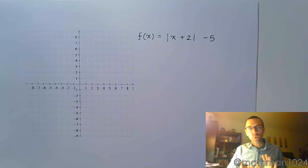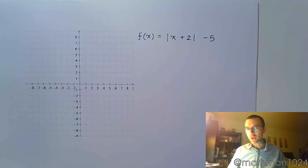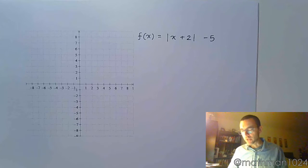So now that we've seen the main ways that we have of changing the location of our functions, let's apply that here to this function. f of x equals the absolute value of the quantity x plus 2 minus 5.